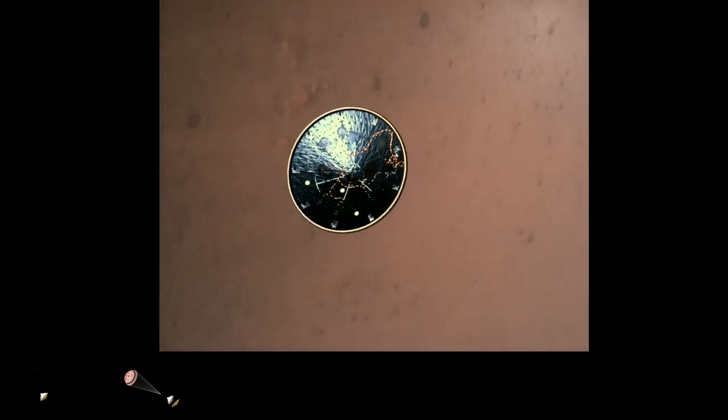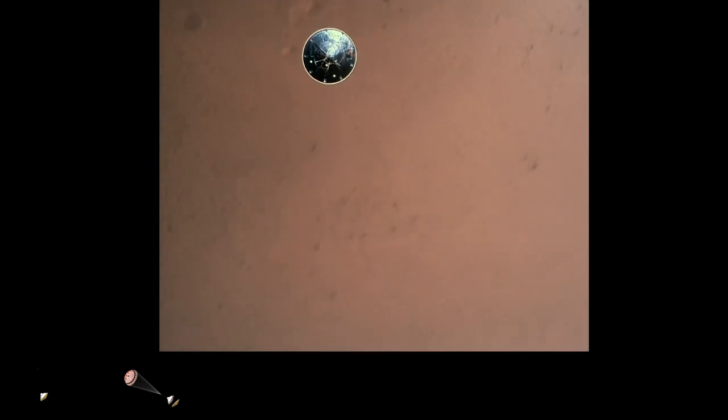Heat shield set. Perseverance has now slowed to subsonic speeds, and the heat shield has been separated. This allows both the radar and the cameras to get their first look at the surface. Current velocity is 145 meters per second at an altitude of about 9.5 kilometers above the surface.